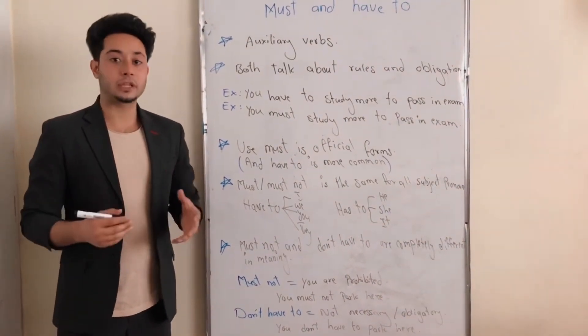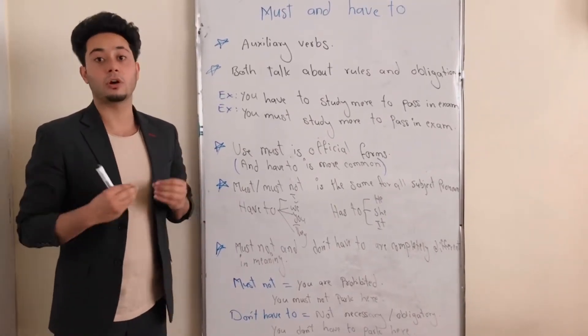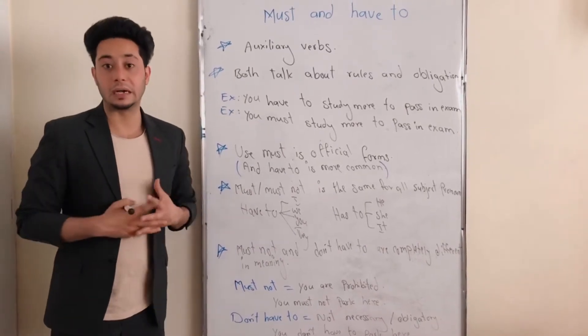Okay, my dear old friends. As I mentioned, today we are going to talk about two auxiliary verbs which are a little bit similar in meaning, which are called must and have to. Let's start our lecture.